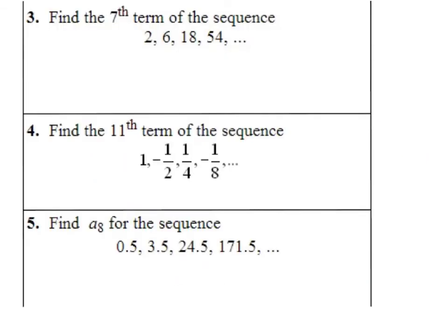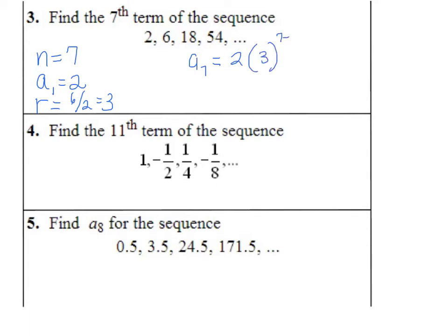Here are examples using geometric sequences. To find the seventh term: n equals 7, a sub 1 equals 2, and r equals 6 divided by 2 which is 3. So a sub 7 equals 2 times 3 to the 7 minus 1 power. Put that in your calculator and you get 1,458.